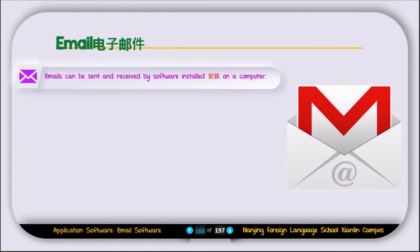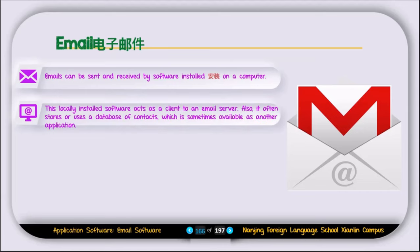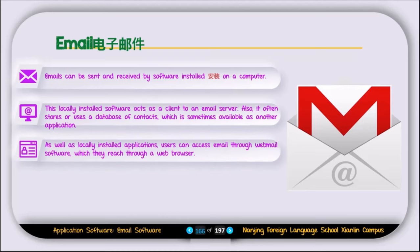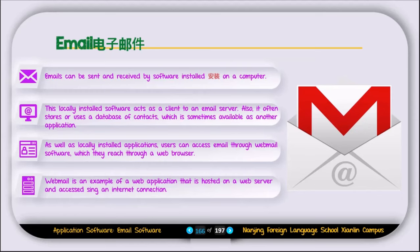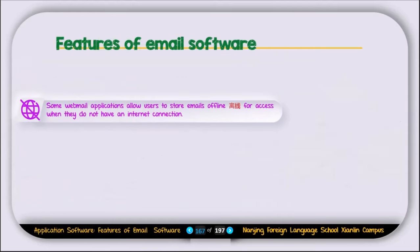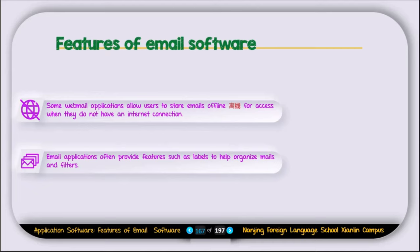Email can be sent and received by software installed on a computer. This locally installed software acts as a client to an email server, and often stores or uses a database of contacts. Users can also access email through webmail software, which they read through a web browser. Webmail is an example of a web application hosted on a web server and accessed via an internet connection. Some webmail applications allow users to store emails offline for access without an internet connection. Email applications often provide features such as folders to organize mail and filters.